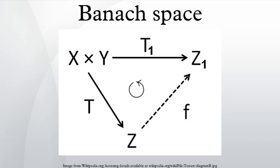An important special case is the following: for every vector x in a normed space X, there exists a continuous linear functional φ on X such that φ(x) = ‖x‖. When x is not equal to the zero vector, the functional φ must have norm 1, and is called a norming functional for x.